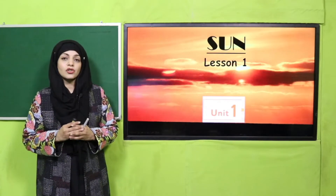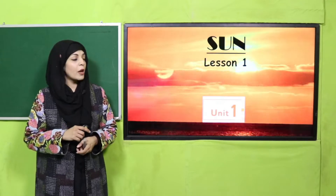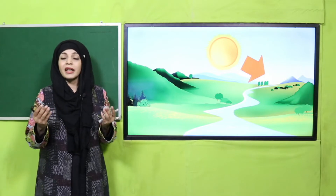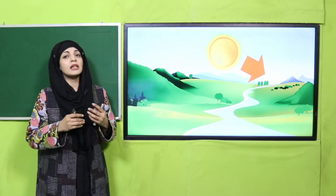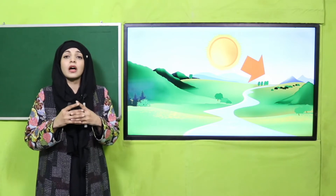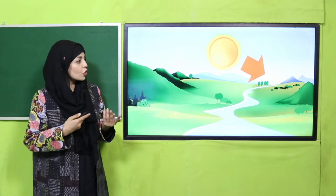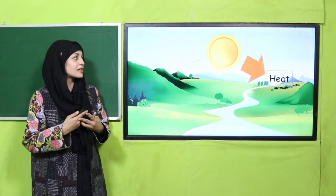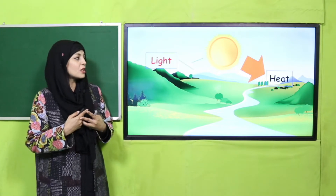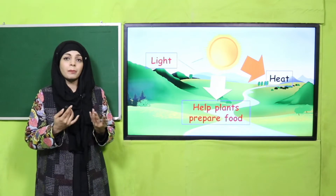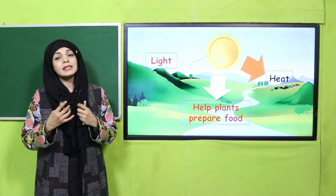I have already given you a complete introduction of this unit, so today we will start it. My dear students, you have already read about the Sun in grade two — that the Sun is very important for us and provides us a lot of benefits. It gives us heat, it gives us light, and it also helps plants to grow and helps them in preparing food.